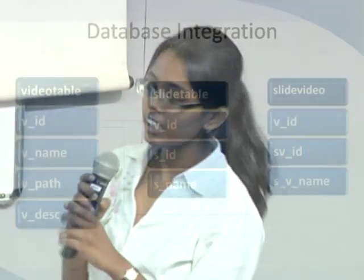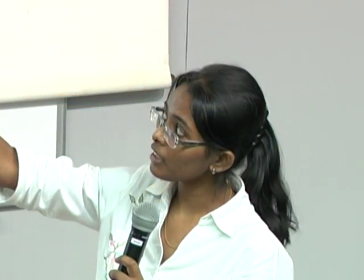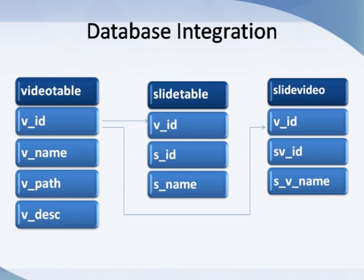This is the database integration part. We started with basic tables in PostgreSQL: the video table, which is the main table, and the slide table, which contains the VID as the primary key, slide ID, and slide name. There is also a slide video table — instead of slides, you can have videos integrated with the main video.